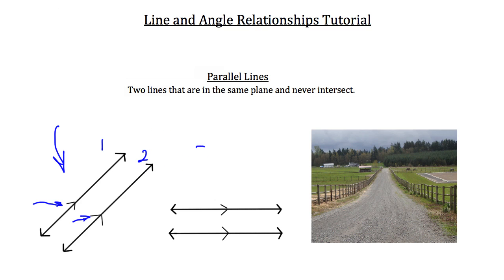The second example shows another pair of lines. Again, you can tell that they're parallel because they have the parallel marks here and here. An example of parallel lines in everyday life would be the fences running down the left and right side of a road. For the most part, these two fences run in parallel lines and they'll never intersect — they're just going to keep running parallel to each other.